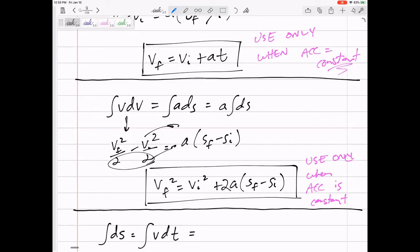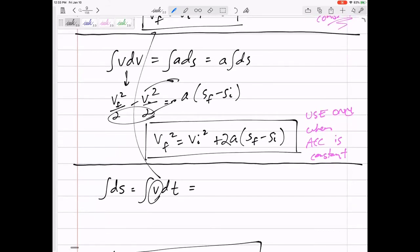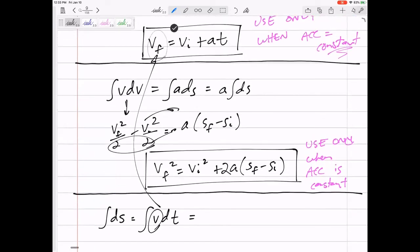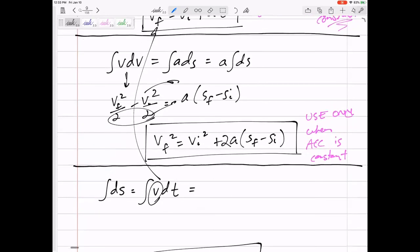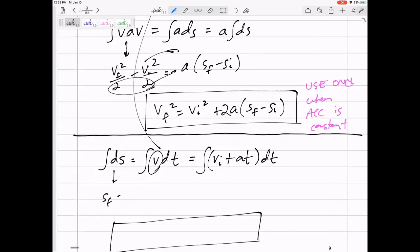All right, one more. If acceleration is constant, then our velocity we can rewrite. So this vf—sometimes I don't write this f, it's just kind of the v. So this v we can rewrite as v initial plus at, and we can take that integral. So this would be sf minus si, and then the integral of v with respect to t. V initial is just its initial velocity. You can only have one initial velocity. It's whatever it is. It's not a function. It's just a value, a number.